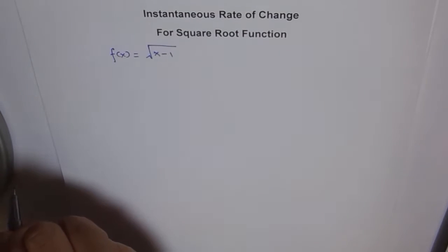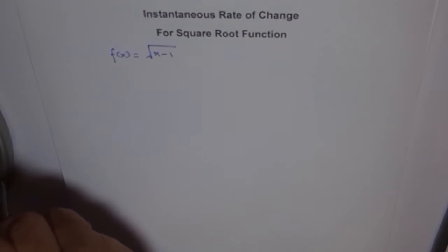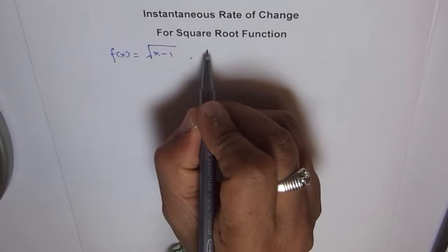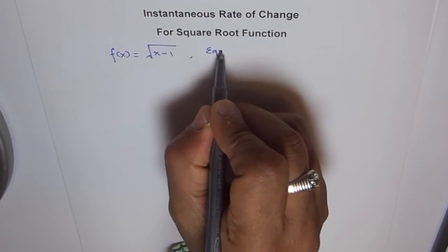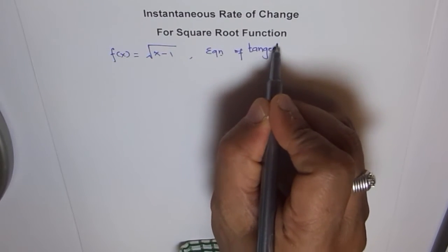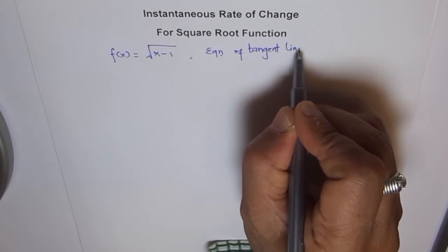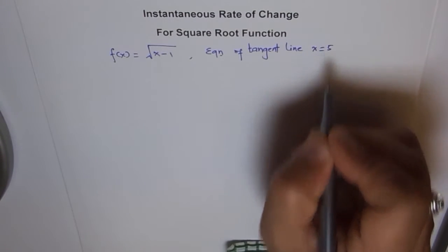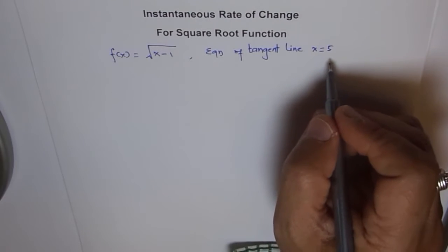Now we will take this function and extend our problem. Let's also find the equation of tangent line at a point on this function. So we will have this function and then try to find the equation of tangent line. Let the point be x equals 5.